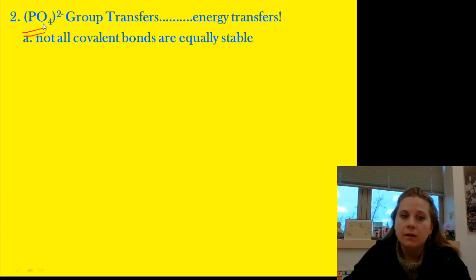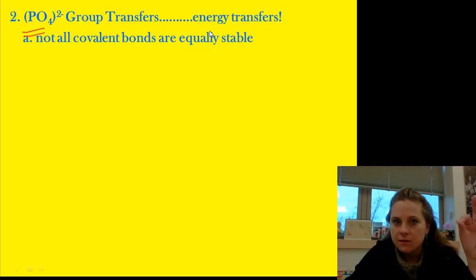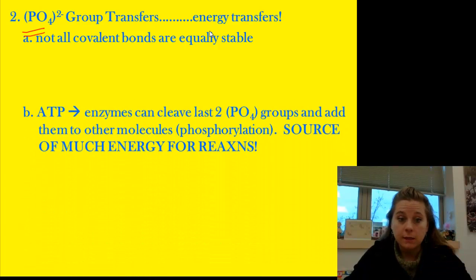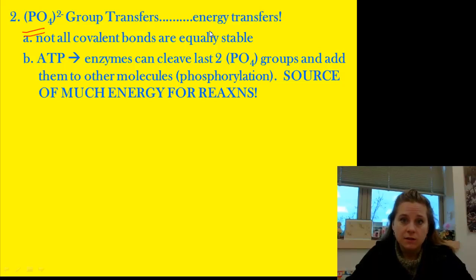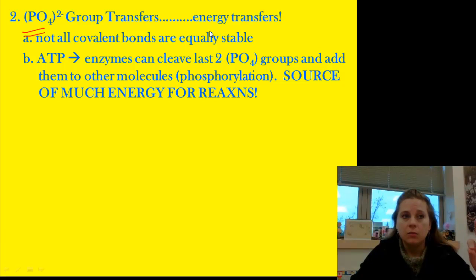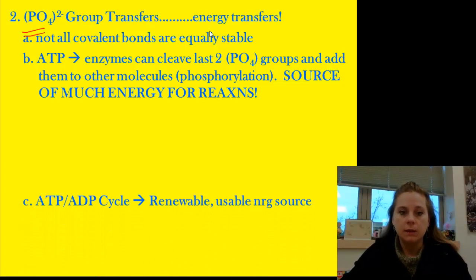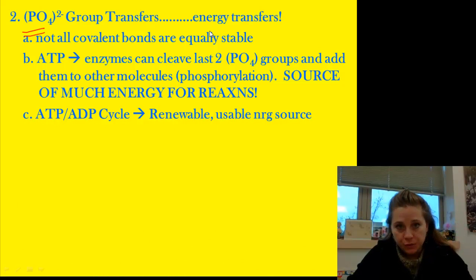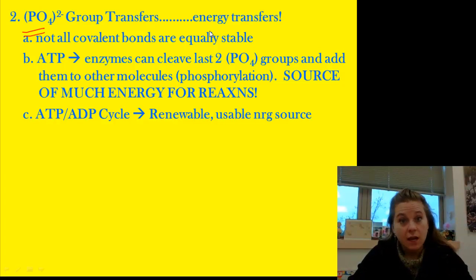Not all covalent bonds are created equal — they're not all equally stable. The slight instability of that phosphate group allows it to be broken easily. Enzymes cleave the last two PO₄ groups and add them to other molecules — a process called phosphorylation — which provides the majority of our energy source. This is where cellular respiration comes in: that's how we build up our cache of ATP.